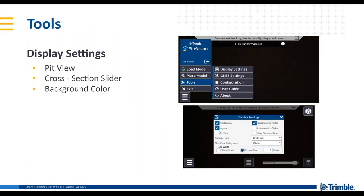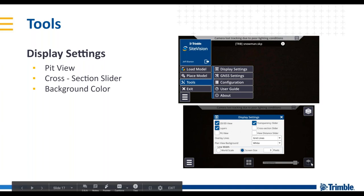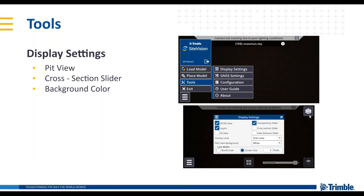Going into the tools of Site Vision, starting with display settings. When you click on Display Settings, it brings up a menu. It defaults to the 2D/3D view on, shown in the lower right. Your layers are in the upper right-hand corner, which I'll touch on again in a little bit.